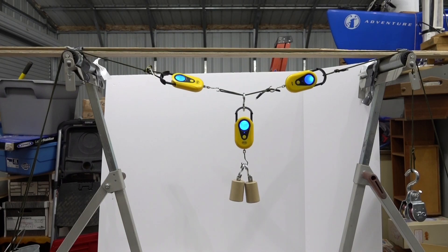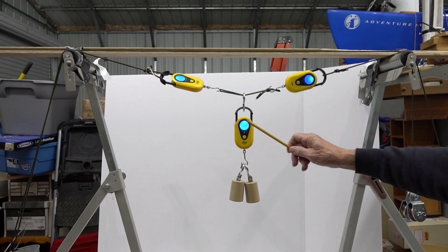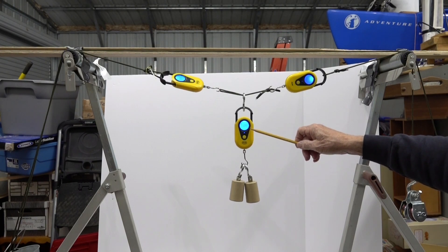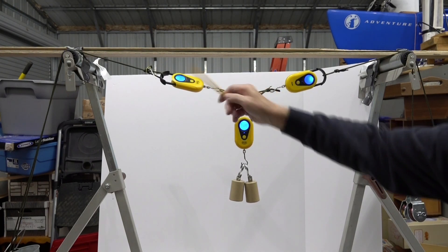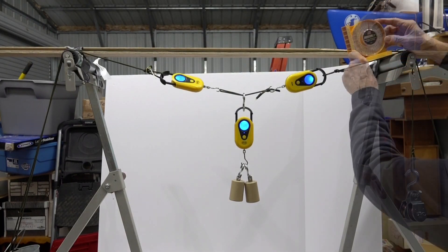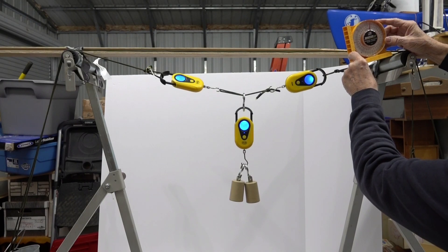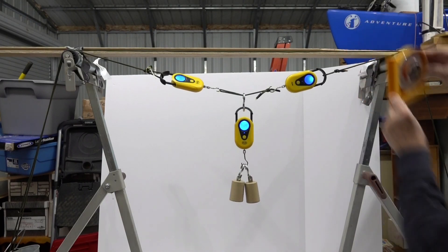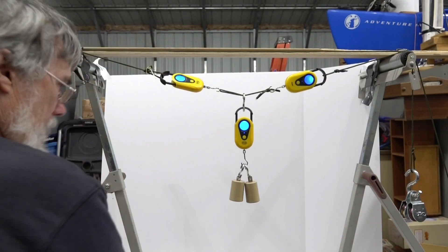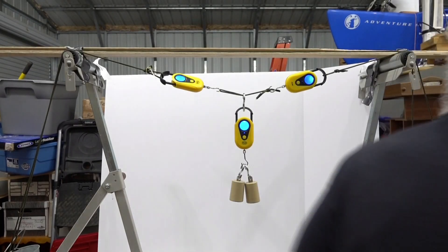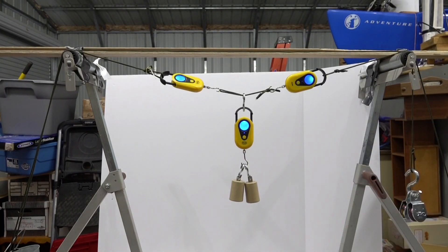Alright, this is our low angle setup. Our scale here is reading 1.42 pounds. These scales are accurate to plus or minus 0.02 pounds. 2.48, 2.46. Our angle is right at about 16, 17. It's about 17. So, we'll do a little calculations and see how close that comes.